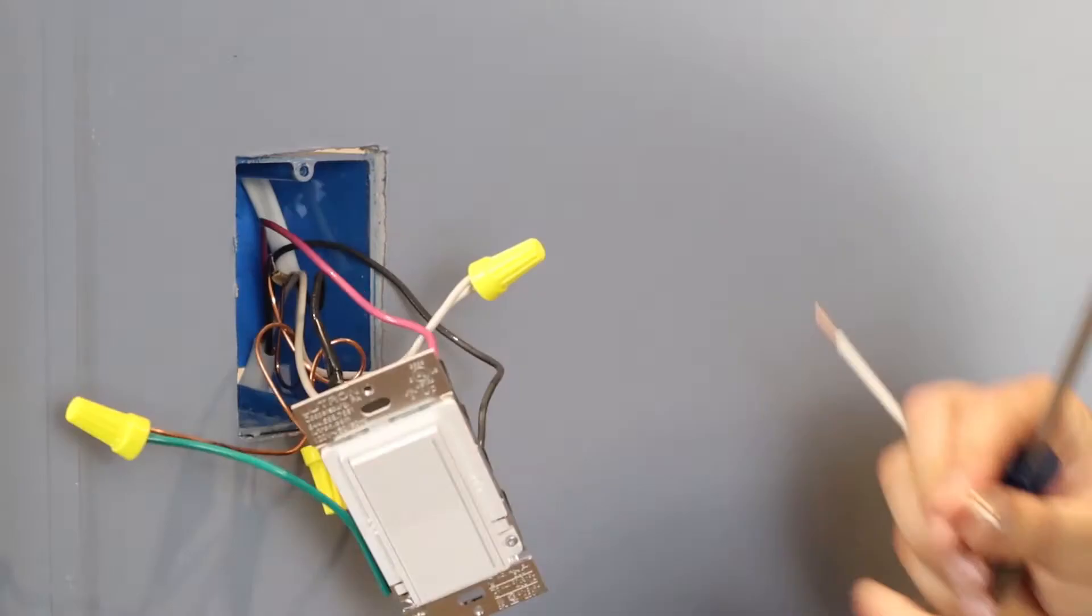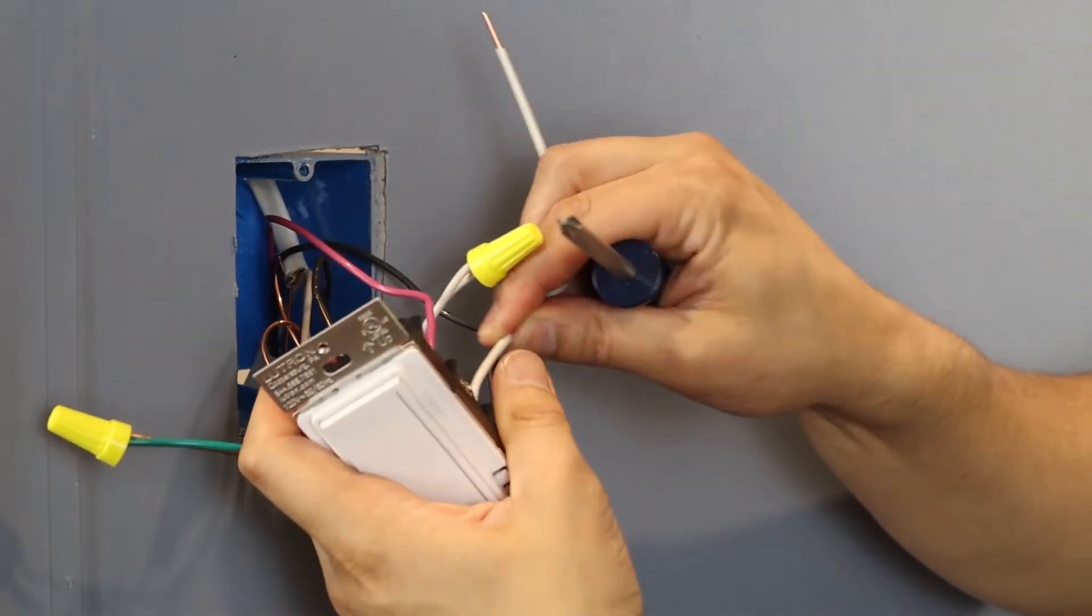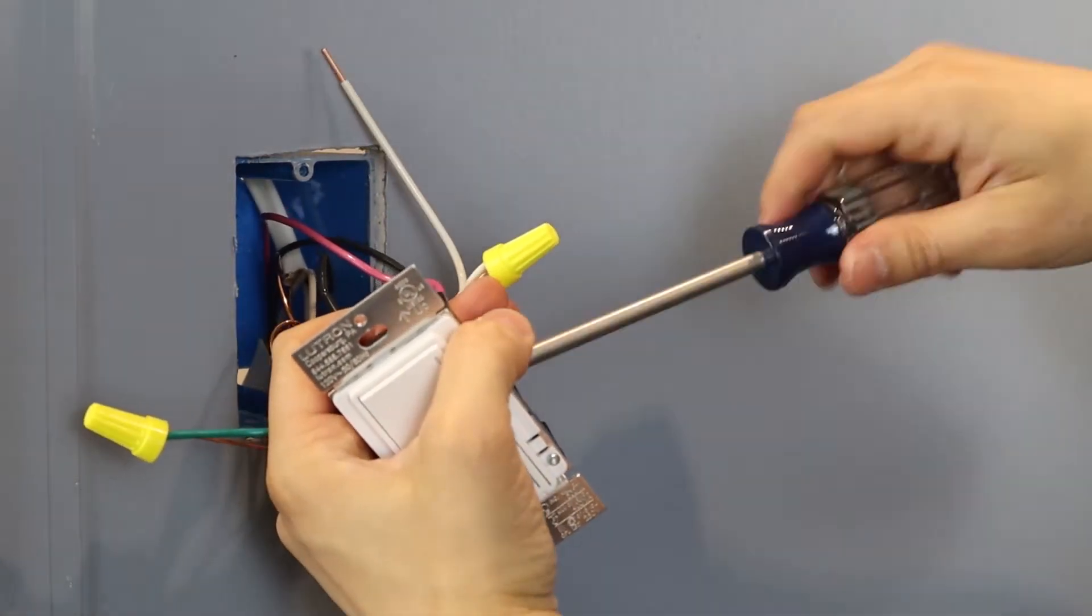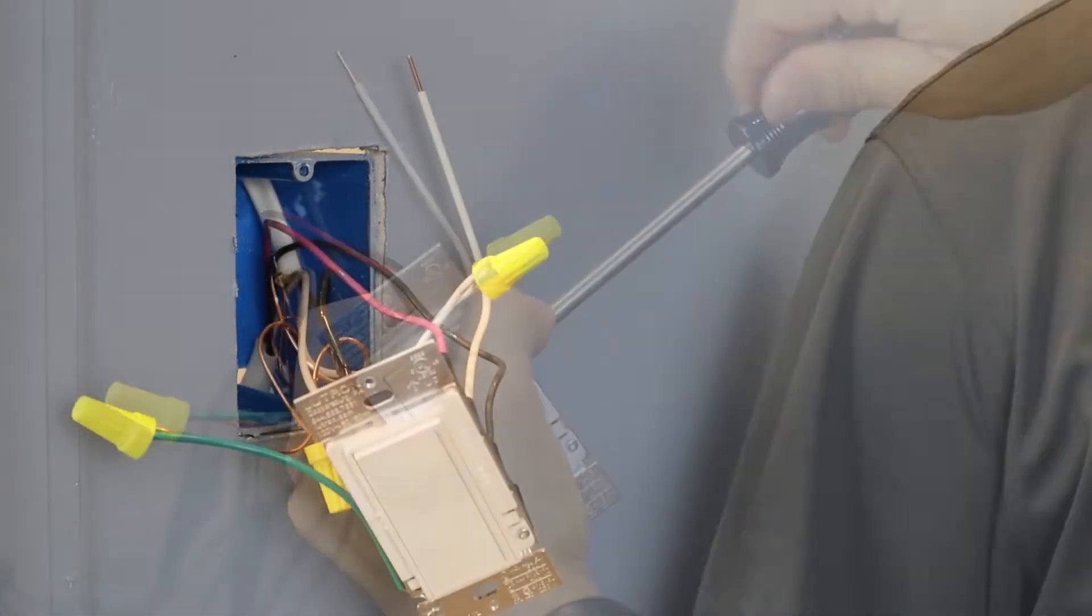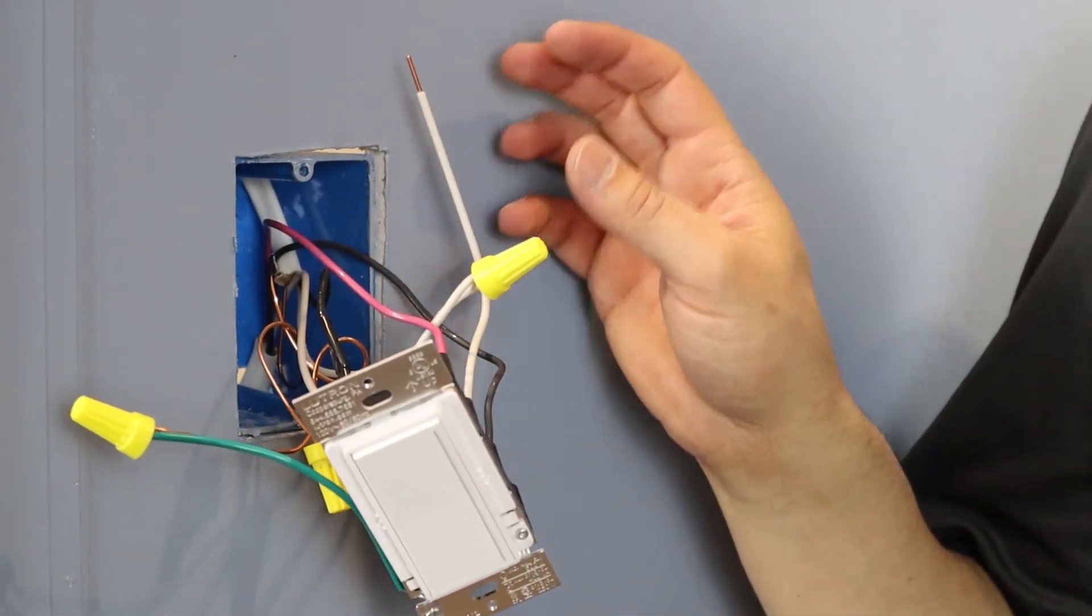Use the white jumper wire that came in the box to attach to the silver screw on your dimmer. Connect the other end into your white neutral wires.